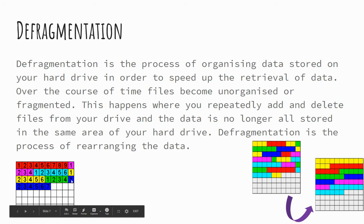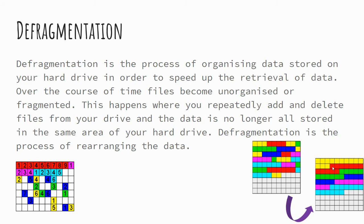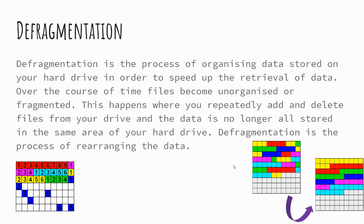You can see in the animation on the bottom left that process happening, where the files are reorganized on the hard drive. This means the computer doesn't necessarily need to scan the entire hard drive to retrieve files that are stored sequentially. So if, for example, we were looking for the red file, the hard drive doesn't need to be searched any further than where those files are located.